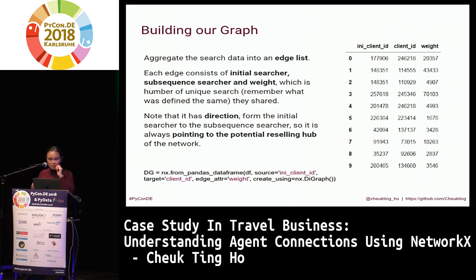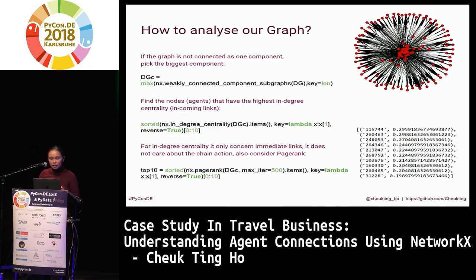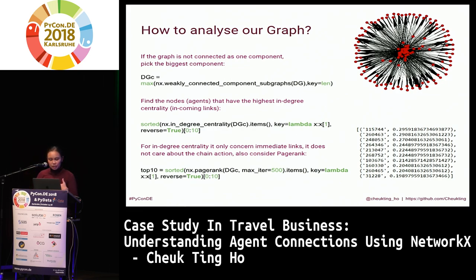From there, we can see the hub — which one, if you're always being pointed at, has high potential that you are reselling for all these people connected to you. I want to find out who gets all these connections. If you use NetworkX to plot a graph, it looks like a sea urchin — not the best way to illustrate it, especially with a large number of nodes. So we need to see it in a more collective, statistical way.